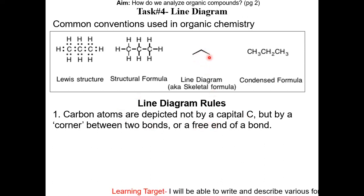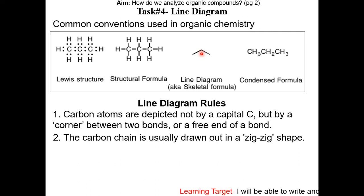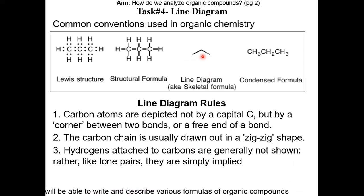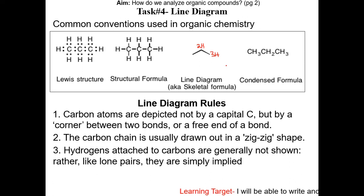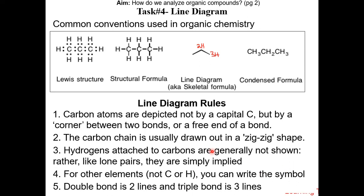Let's go over the rules of drawing a line diagram. Carbon atoms are not depicted with a capital C, but as a corner between two bonds or a free end of a bond — so here there are three carbon atoms. The carbon chain is usually drawn in a zigzag shape because each corner represents a carbon; if it were straight, you wouldn't be able to tell if there's a carbon there. Hydrogens attached to carbons are generally not shown — like lone pairs, they are simply implied. Each corner carbon has two hydrogens; each end carbon has three hydrogens. For other elements that are not carbon or hydrogen, you write the symbol. Double bond is two lines; triple bond is three lines.